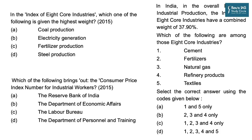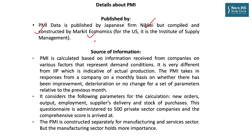PMI data is published by Japanese firm Nikkei but compiled and constructed by Markit Economics — a crucial distinction, as in all other indices the compiling and publishing agency is usually the same. PMI is calculated based on information received from companies on various factors representing demand conditions, and is very different from IIP, which is indicative of actual production. PMI takes responses from companies on a monthly basis on whether there has been improvement, deterioration, or no change for a set of parameters relative to the previous month.